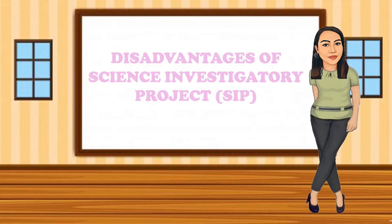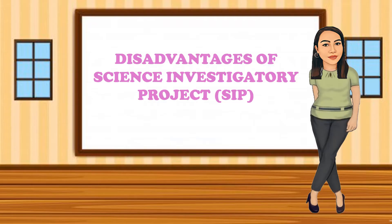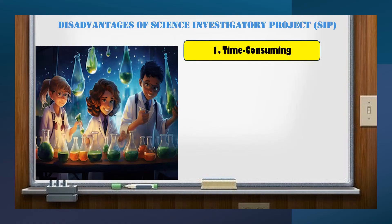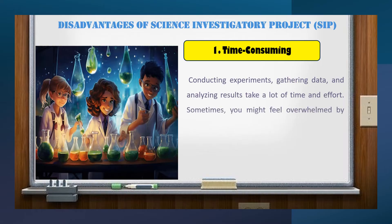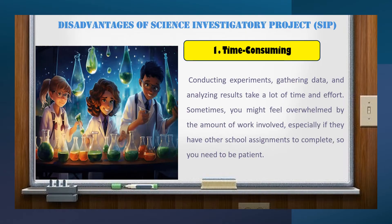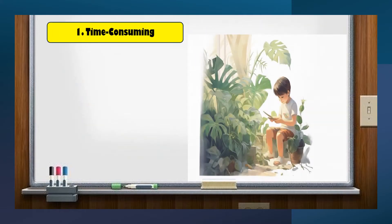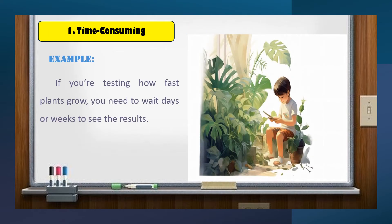Now, let's discuss the disadvantages of Science Investigatory Projects, or SIPs. While they offer numerous benefits, it's important to be aware of some challenges you might face. First, SIPs can be quite time-consuming. Conducting experiments, gathering data, and analysing results take a lot of time and effort. Sometimes, students might feel overwhelmed by the amount of work involved, especially if they have other school assignments to complete. So you need to be patient. If you're testing how fast plants grow, you need to wait days or weeks to see the results.